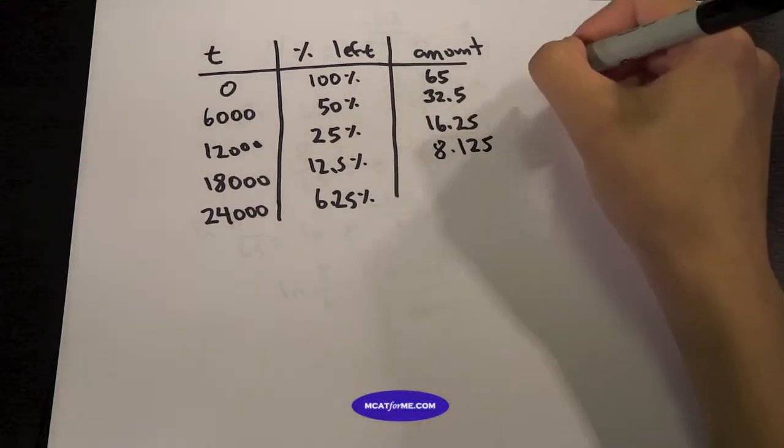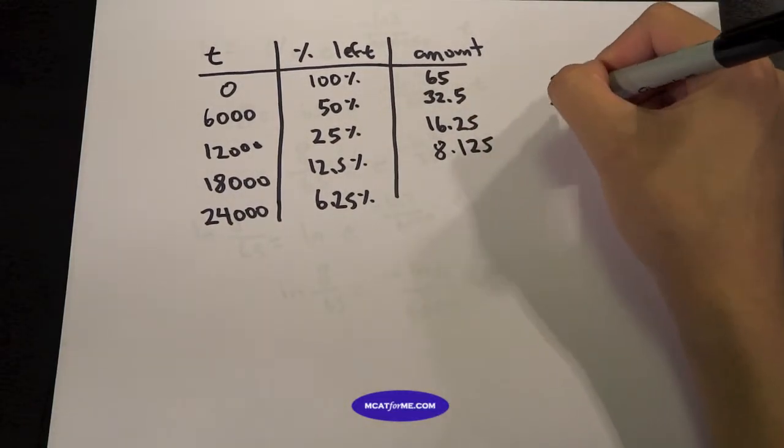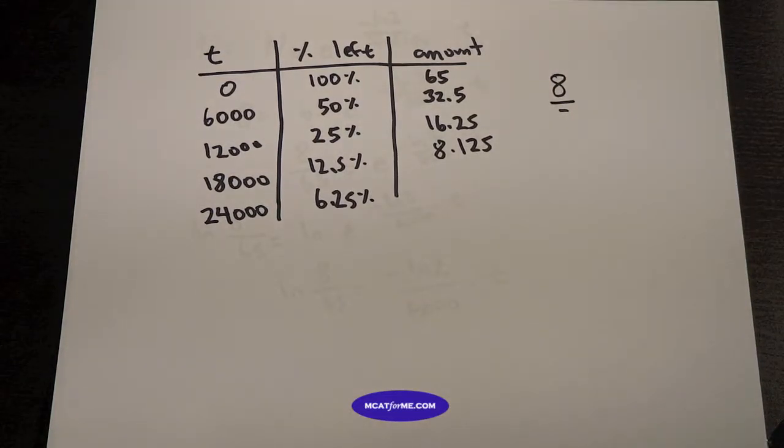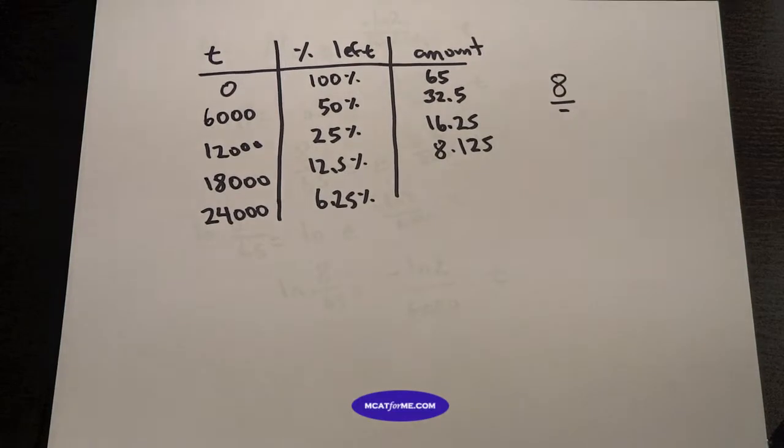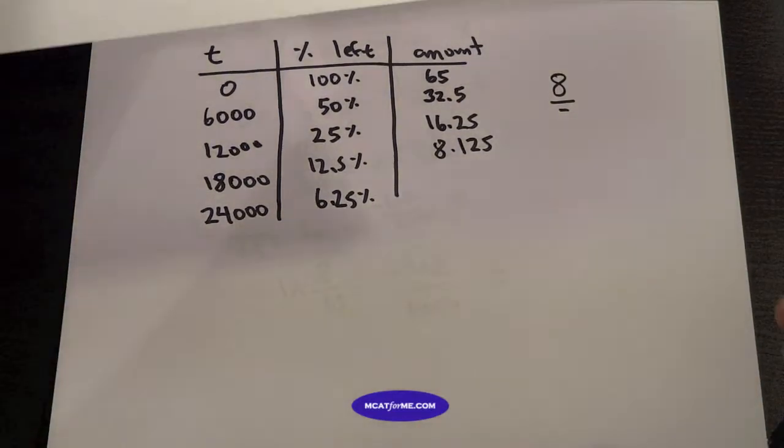And now we're at 8.125. Oh, so our actual final amount was 8. We wanted 8 grams in our case when we converted. So 8.125. Oh, that's perfect. So let's find our answer, 18,000.